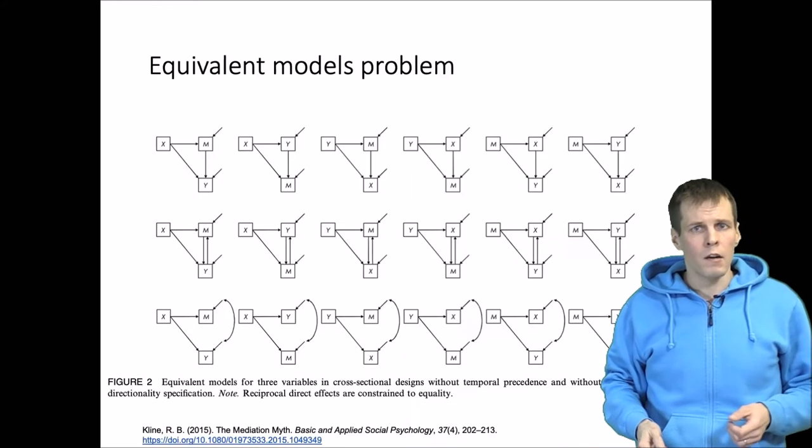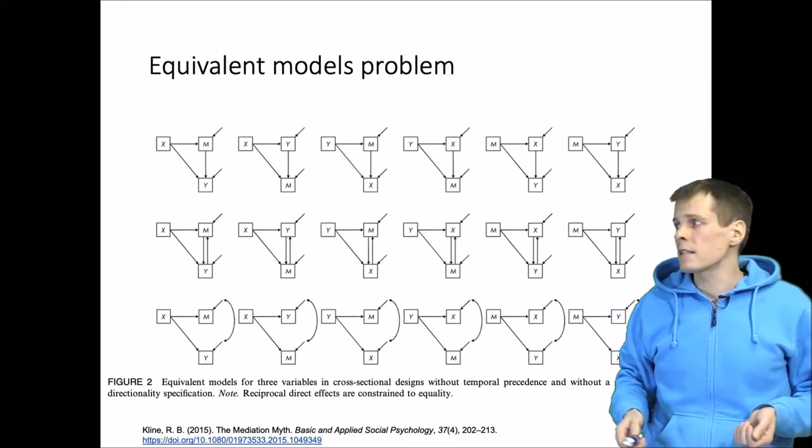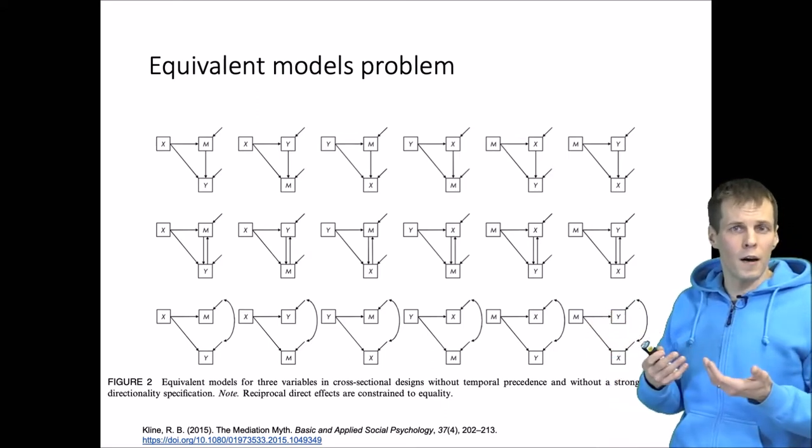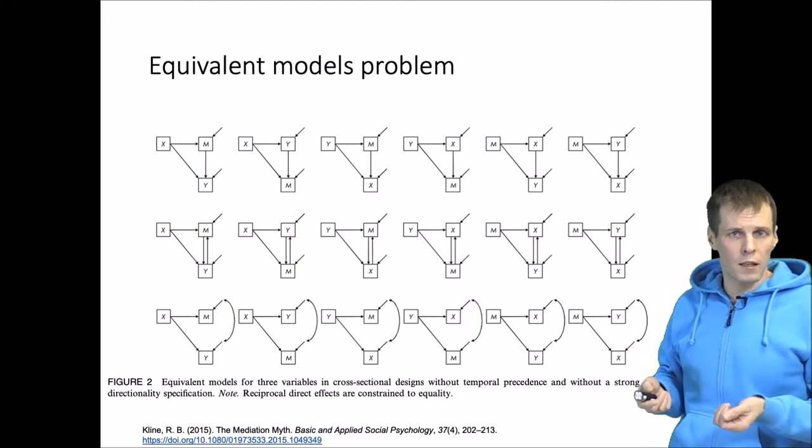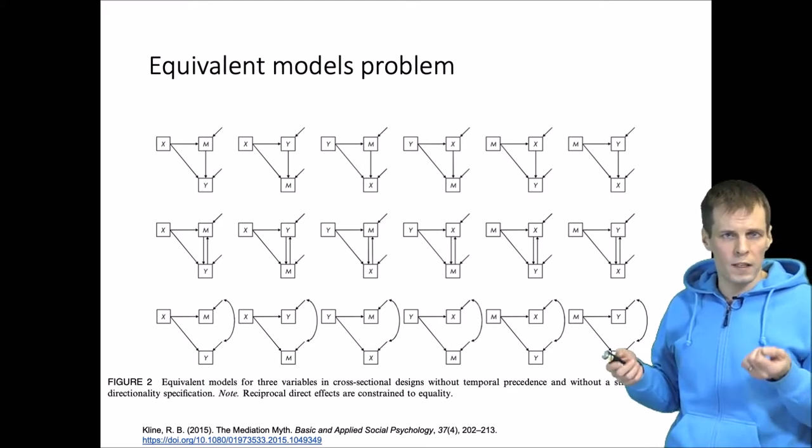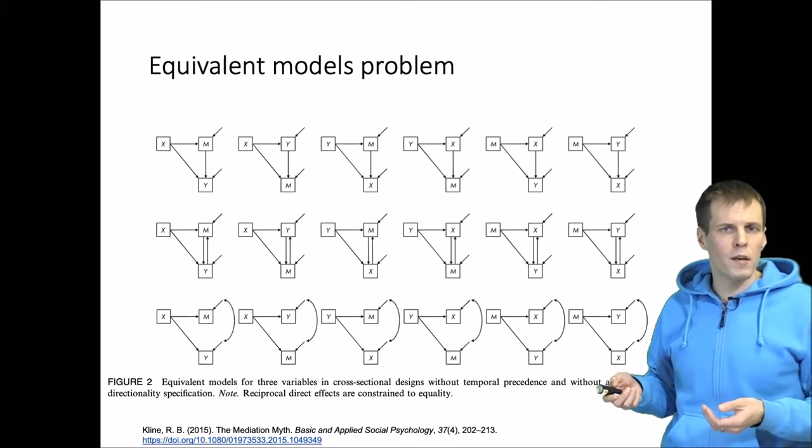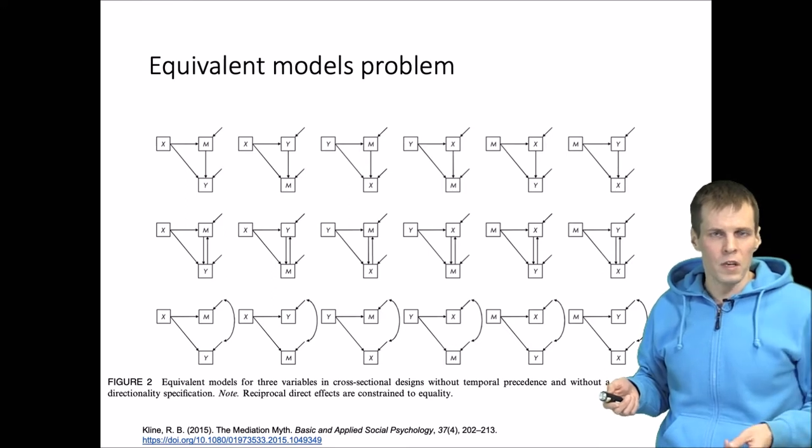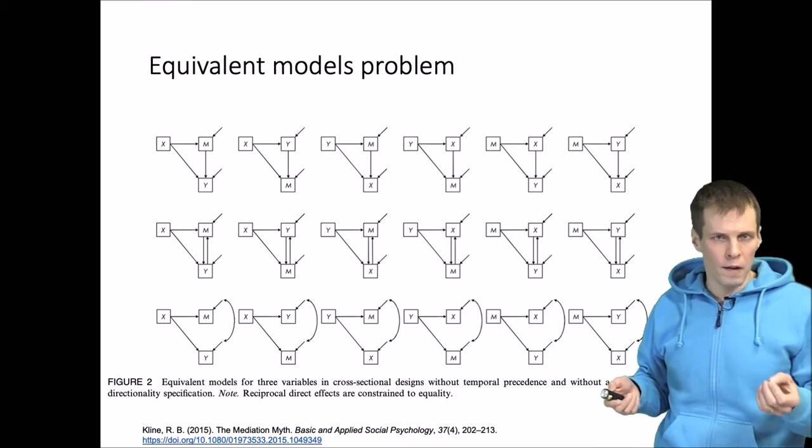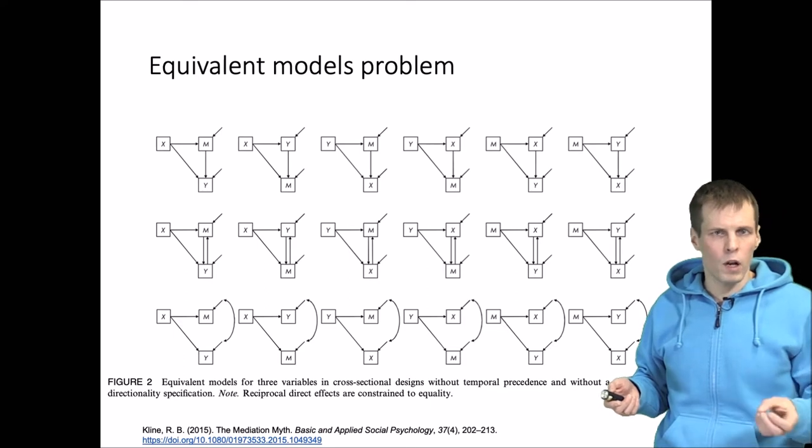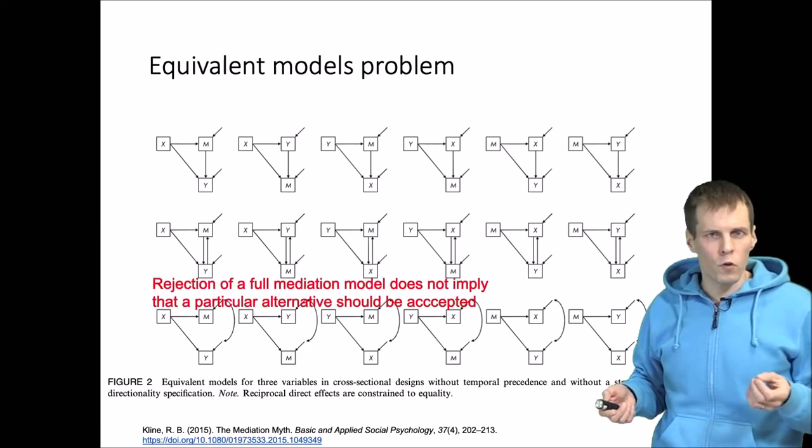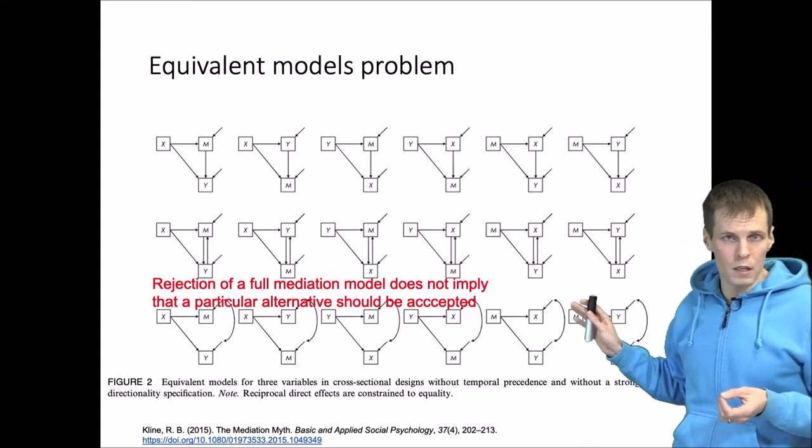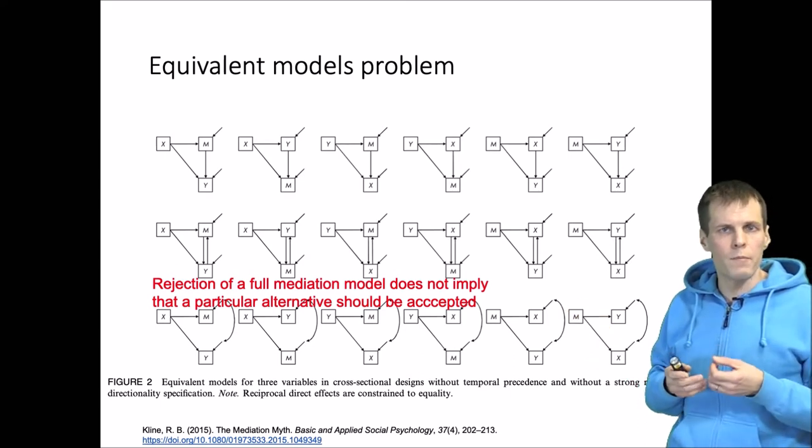This graphic is from Klein's article, and he lists a subset of the models that you can form using these three variables that are all just identified. All these models fit the data well and could be used as alternatives for the full mediation model. Because there are multiple equivalent models that explain the data equally well, the rejection of the full mediation model does not imply that a particular alternative should be accepted. Model acceptance choices should be made based on theory.